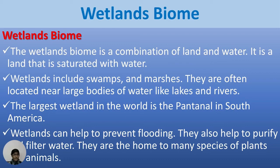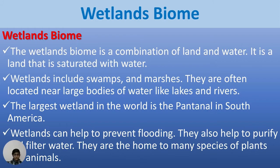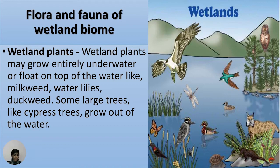Wetland biome: The wetland biome is a combination of land and water — it is land that is saturated with water. Wetlands include swamps and marshes. They are often located near large bodies of water like lakes and rivers. The largest wetland in the world is the Pantanal in South America. Wetlands help to prevent flooding and also help purify and filter water. They are home to many species of animals and plants.